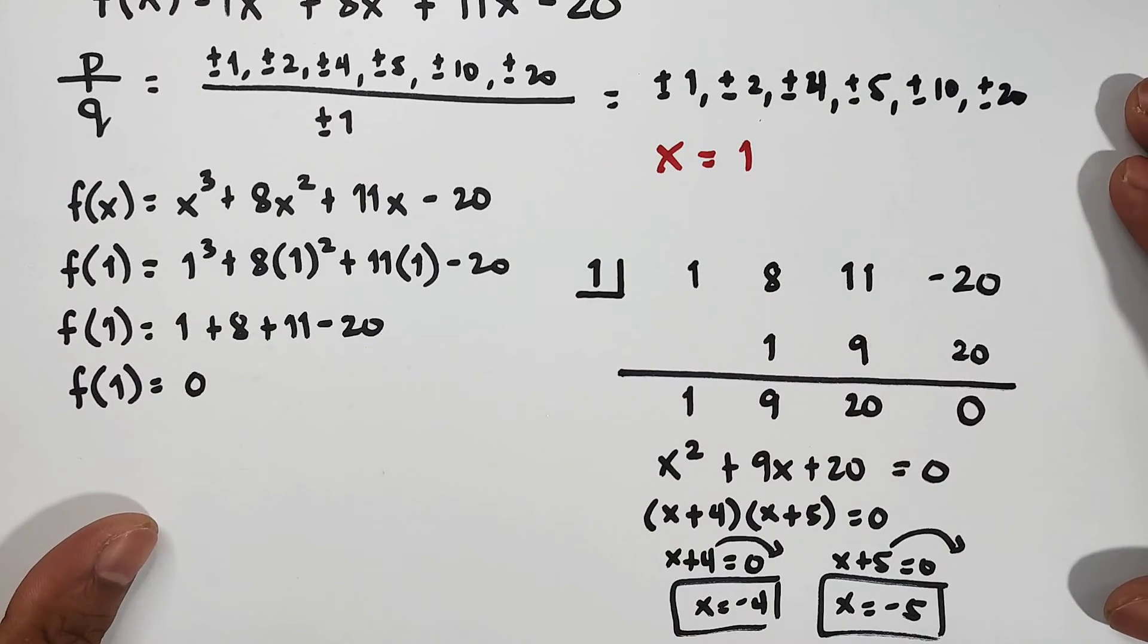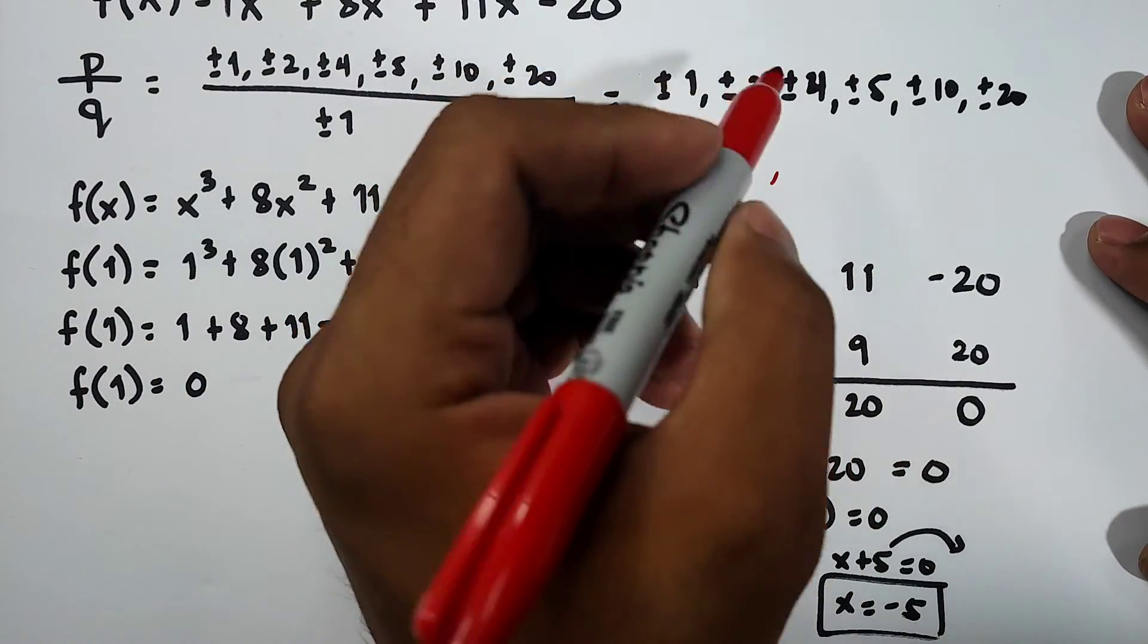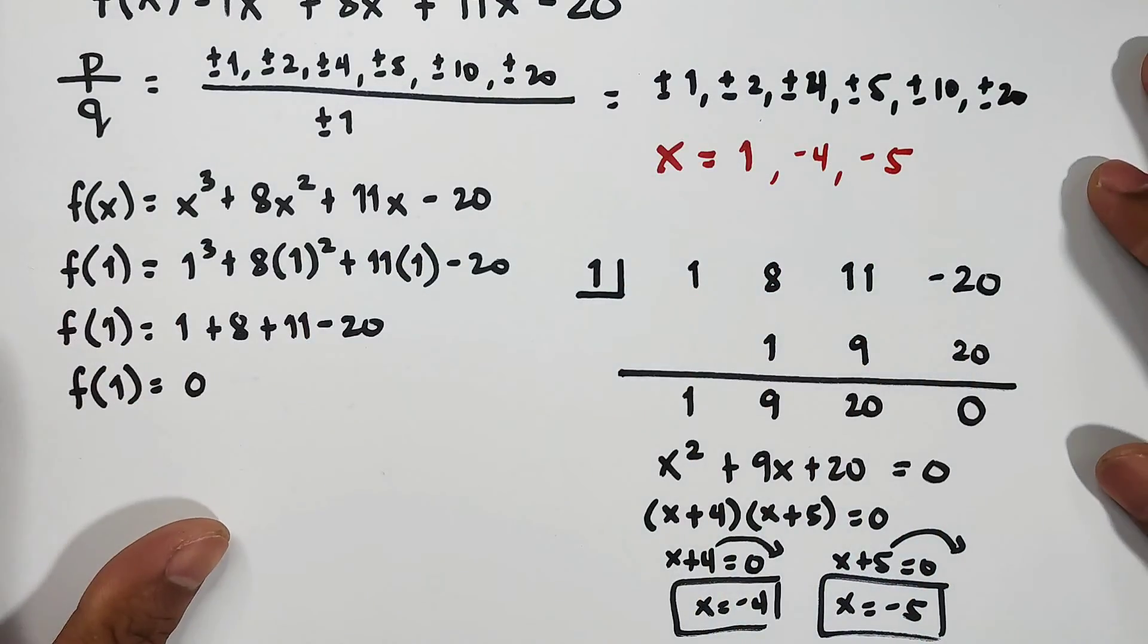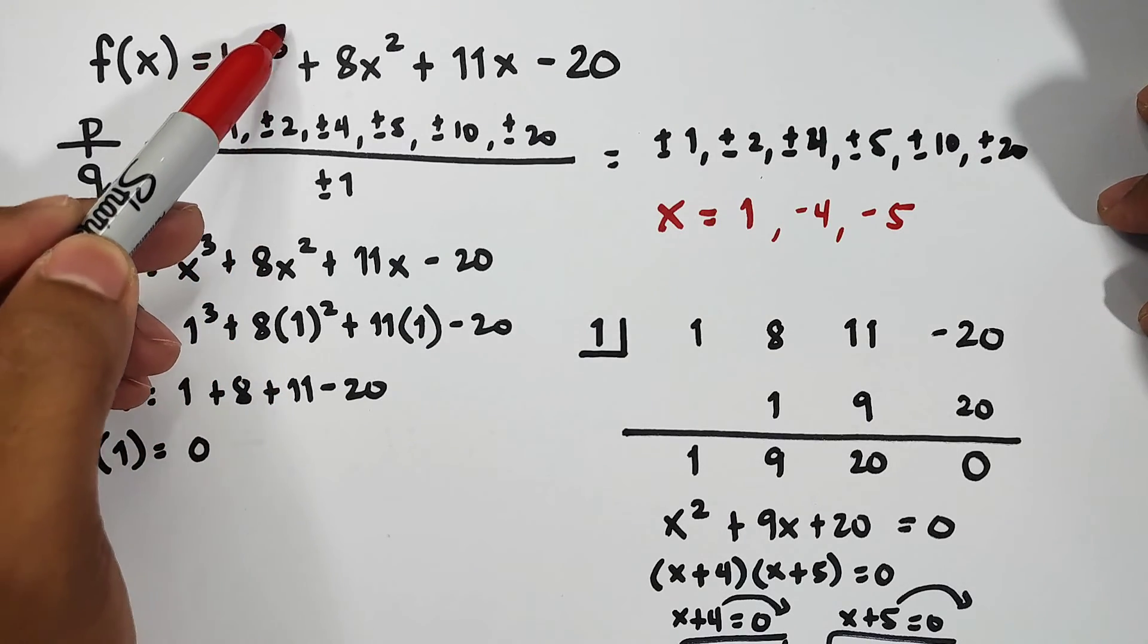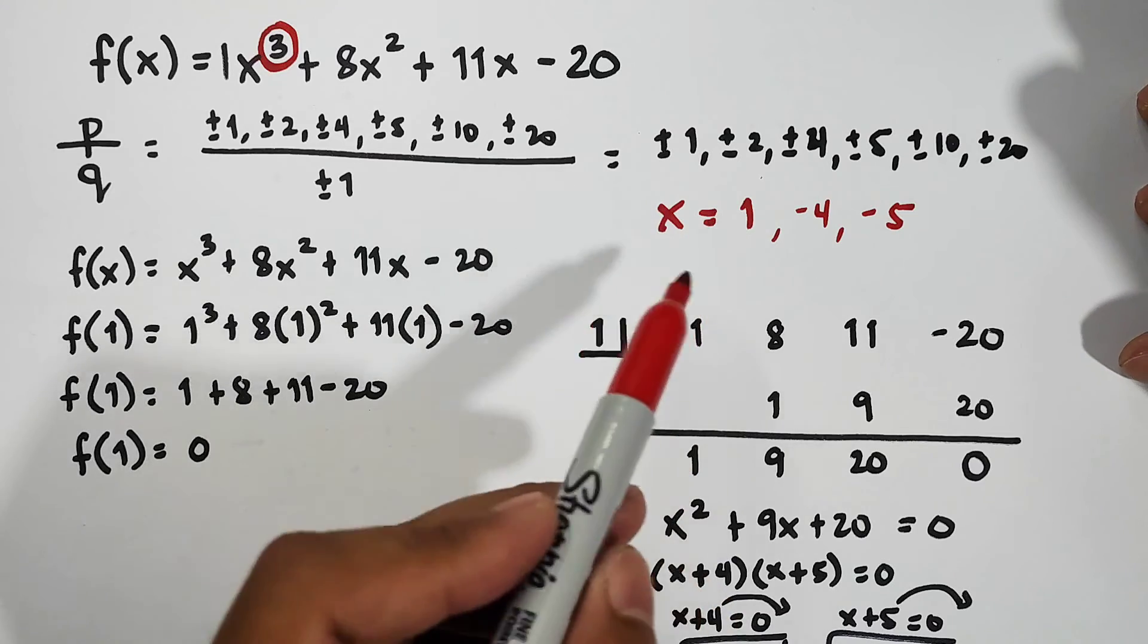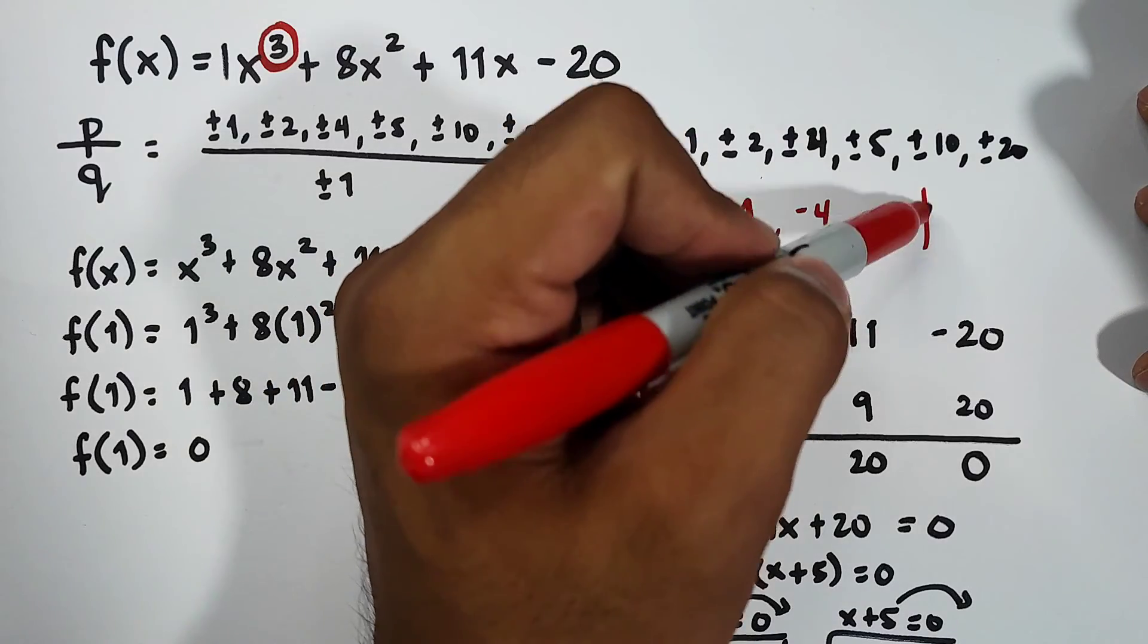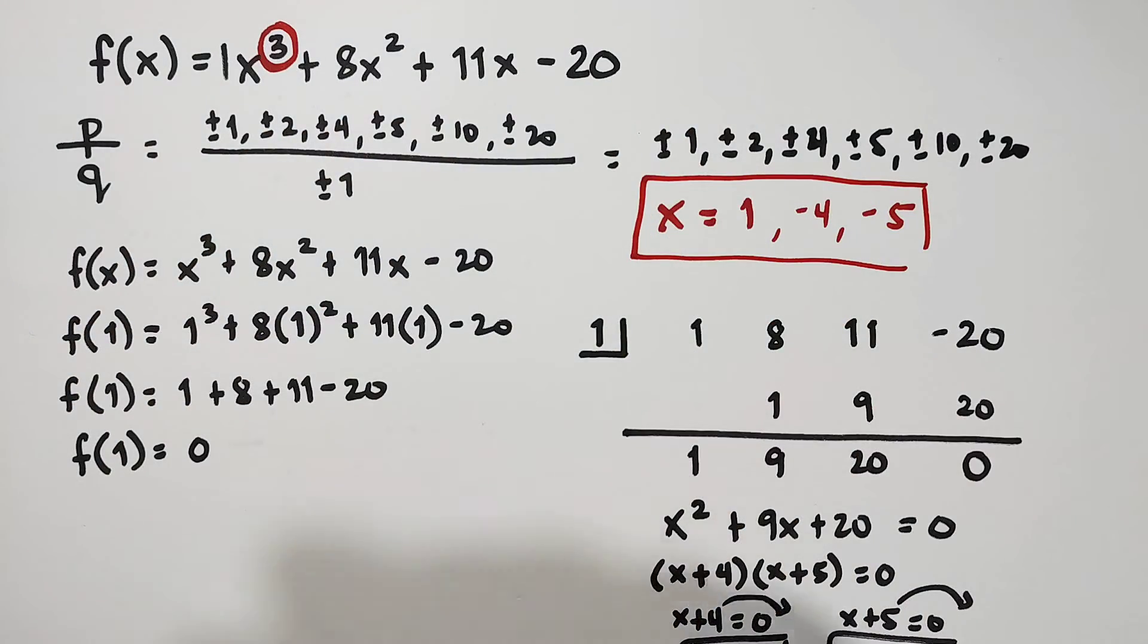So what does this mean? Since we got -4 and -5, meaning the other zeros or solutions together with x = 1 are -4 and -5. As I told you earlier, since our degree is 3, automatically we have 3 different roots or zeros. The zeros are 1, -4, and -5. So I hope you got the method we are using on how to get the zeros of the function.